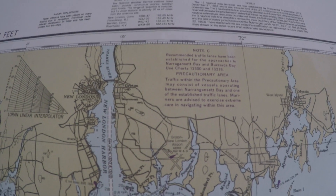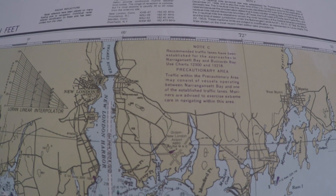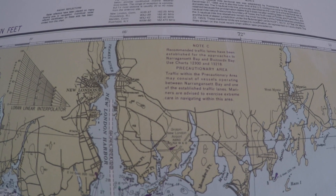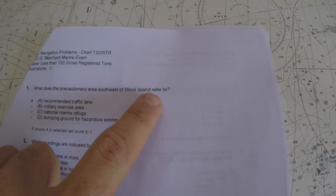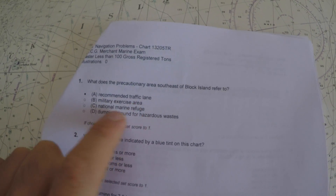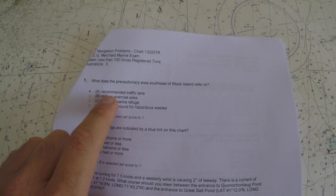Note Charlie reads: for the precautionary area, traffic within it may consist of vessels operating between Narragansett Bay and one of the established traffic lanes. Looking at the answers — recommended traffic lanes, military exercise areas, national marine refuges, or dumping grounds for hazardous waste — clearly the answer is A. My test strategy is always to RTFQ: read the question and make sure I have the right geographic reference, direction, and answer.